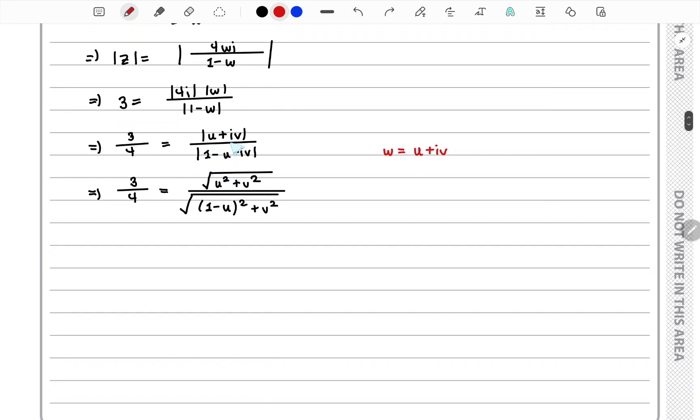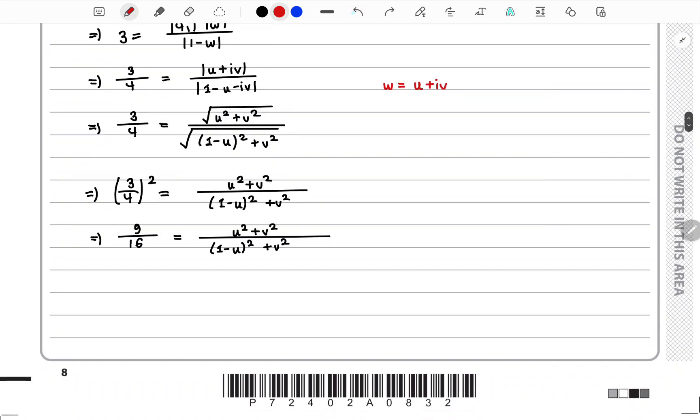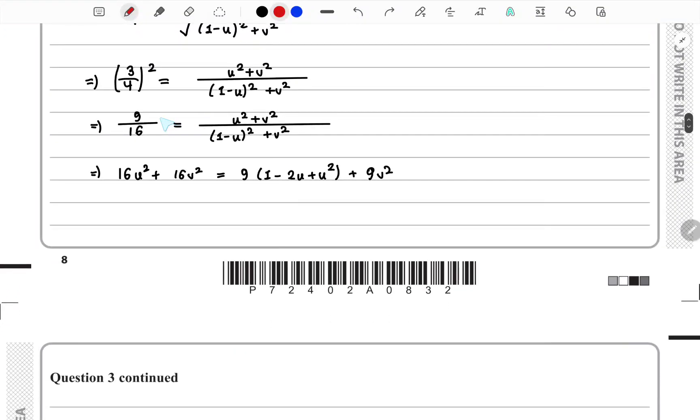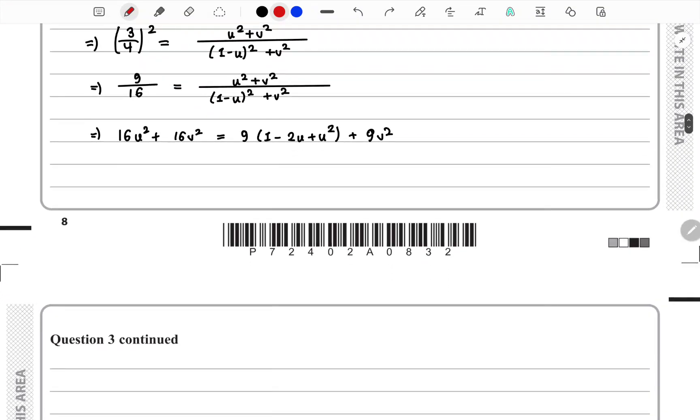Then we apply the modulus and find the magnitude of both of these numbers. We square both sides to get rid of the square root, and then we multiply and cross multiply.